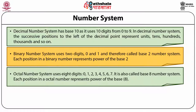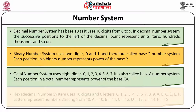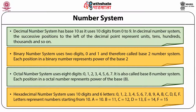Each position in an octal number represents a power of the base. The hexadecimal number system uses 10 digits and 6 letters — that is in total 16 — from 0 to 9 then followed by A, B, C, D, E, F. Letters represent numbers starting from 10. That is A is equivalent to 10, B is equivalent to 11, C is equivalent to 12, D is 13, E represents 14 and F represents 15.